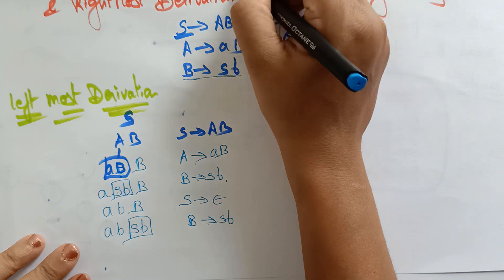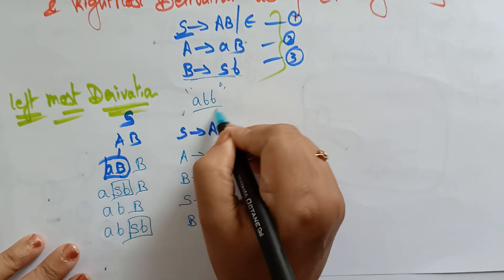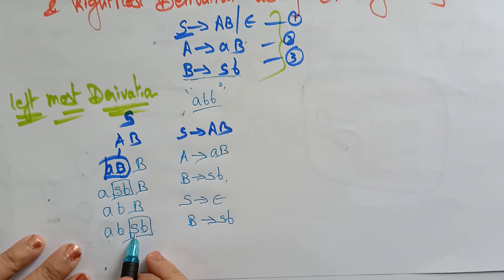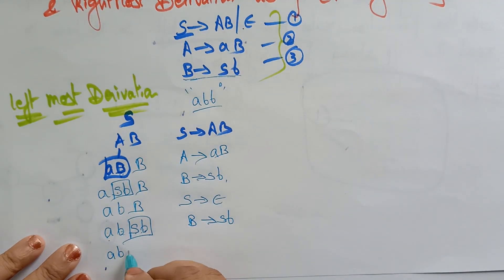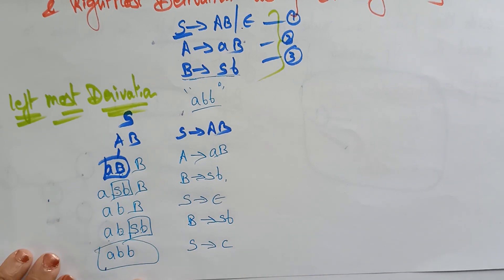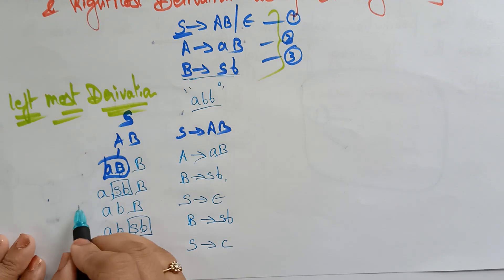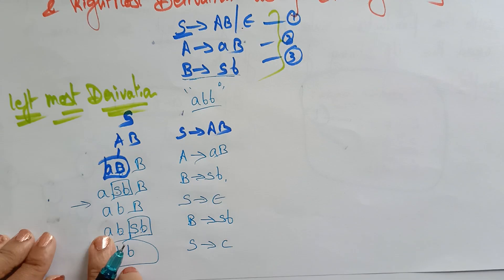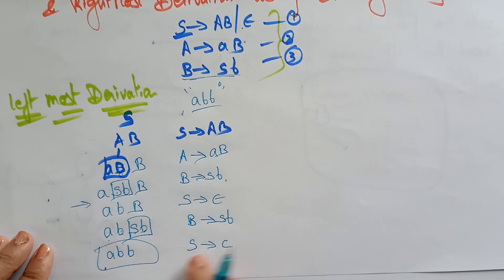I need to get the string 'abb'. We are almost reaching the input string. In place of S I am keeping epsilon — empty string — so I get 'abb', which is our final input string derived using leftmost derivation. In leftmost derivation, you start from the left-hand side non-terminal and complete it before moving right.